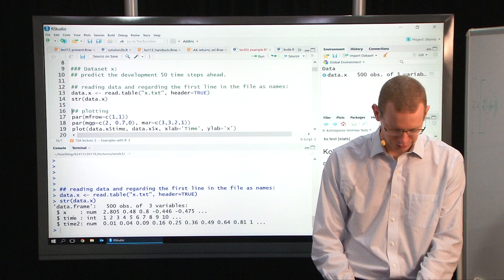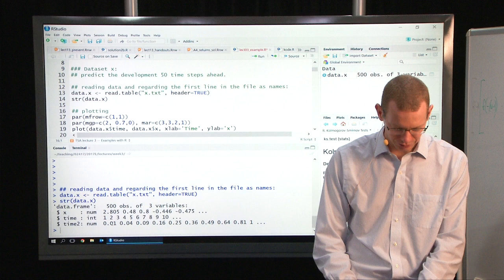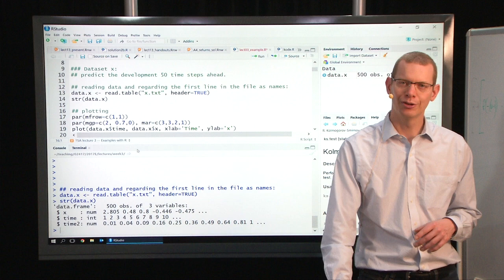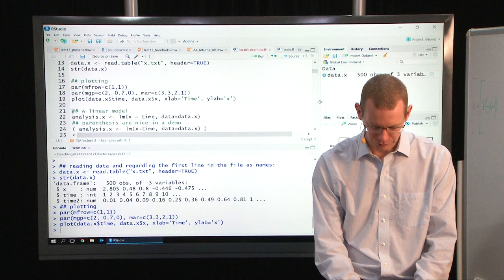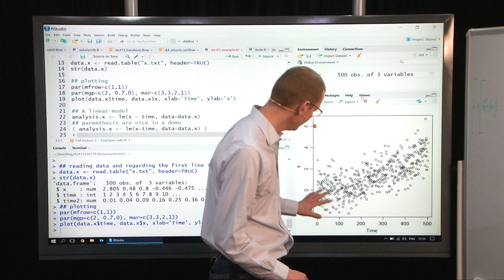We got x, we got some time, observation times here, and then we have something called time 2, we're not paying too much attention to that, but just continue from here. A good thing is always to plot the data. I'm just setting some parameters for the plot. Let me make it a little bit larger.